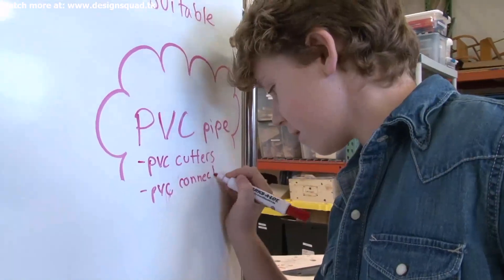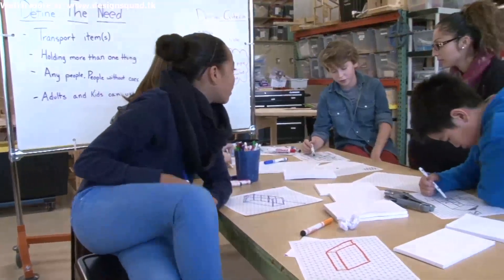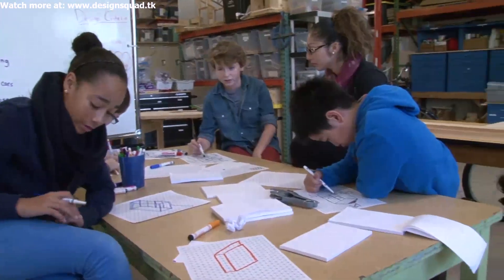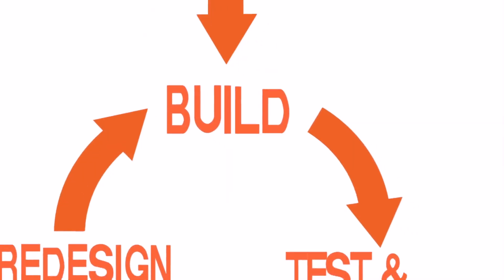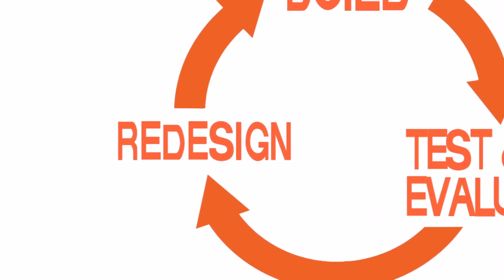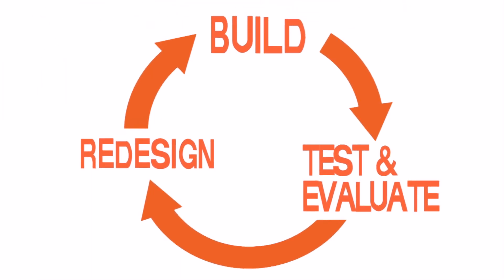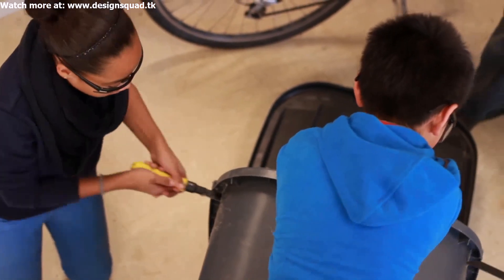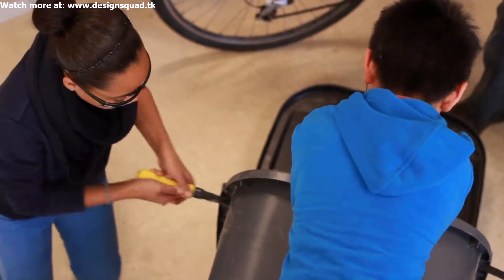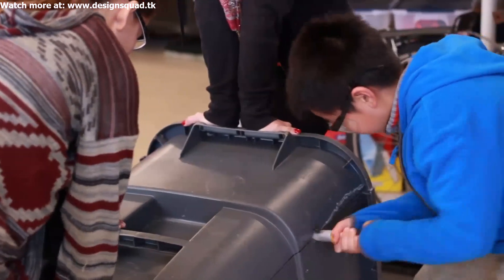The next step in the design process is actually three steps that cycle around and may be repeated: build, test, evaluate, and redesign. We decided to work on the repurposed trash can idea first.